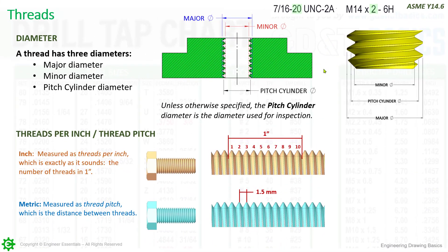Let's look at some of the general terminology that we use for threads when trying to define them or interpret from a print or even the manufacturer of threads. Up in the top left-hand corner, for diameter, a thread has three different ones: major diameter, minor diameter, and the pitch cylinder diameter. There's an image to the right showing each of those. Remember in GD&T that when we apply geometric tolerances to a tapped hole or a threaded feature, it will apply to the pitch cylinder by default. If we want to change that, we have to put minor diameter or major diameter underneath that callout — especially important when your inspection process is using a best-fit pin, since you're truly engaging the minor diameter there.